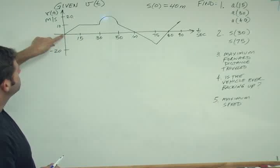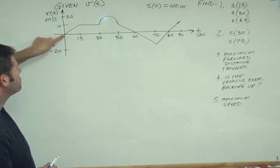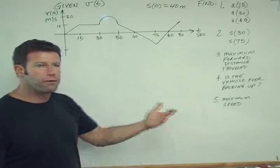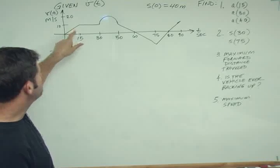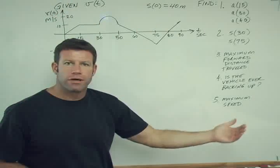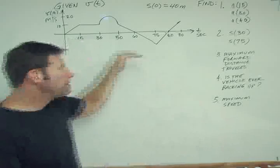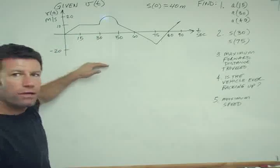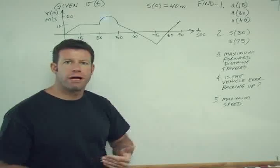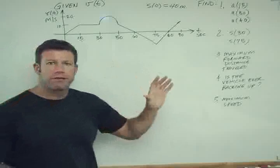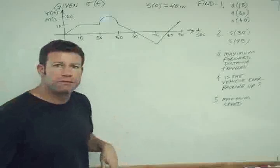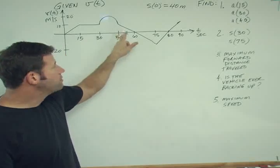First, we start at time zero at v equals zero. That makes sense because we're stopped, right? The car is starting out, and then the velocity increases. Remember, anytime velocity is above the axis, you're going forward, right? You have a positive velocity, you're going forward. Anytime velocity is below the axis, you're backing up. The car is in reverse. You have a negative velocity.